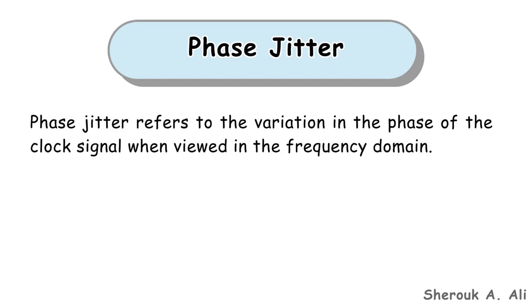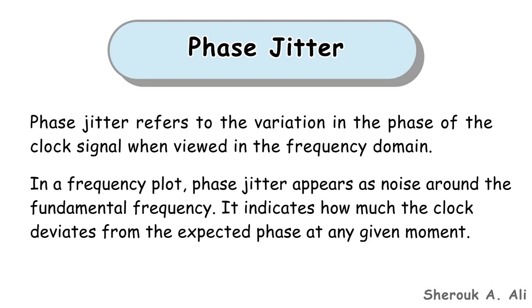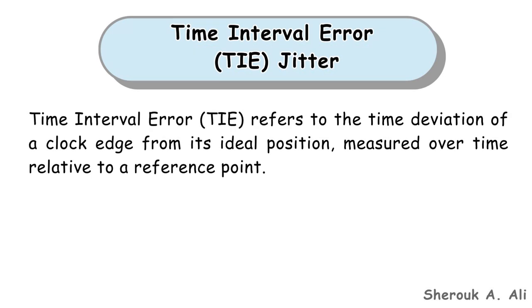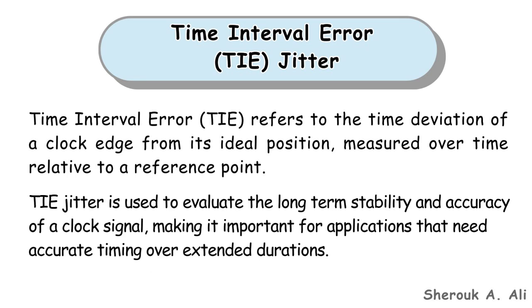Another type is phase jitter, which refers to the variation in the phase of the clock signal when viewed in the frequency domain. In a frequency plot, phase jitter appears as noise around the fundamental frequency, indicating how much the clock deviates from the expected phase at any given moment. Another type is time interval error jitter, commonly known as TIE jitter, which refers to the time deviation of a clock edge from its ideal position measured over time relative to a reference point. TIE jitter is used to evaluate the long-term stability and accuracy of a clock signal.